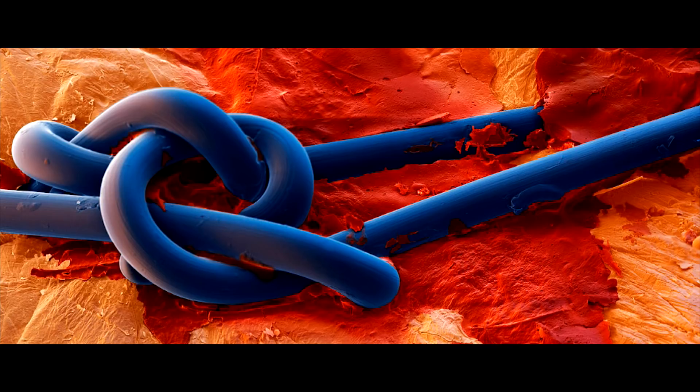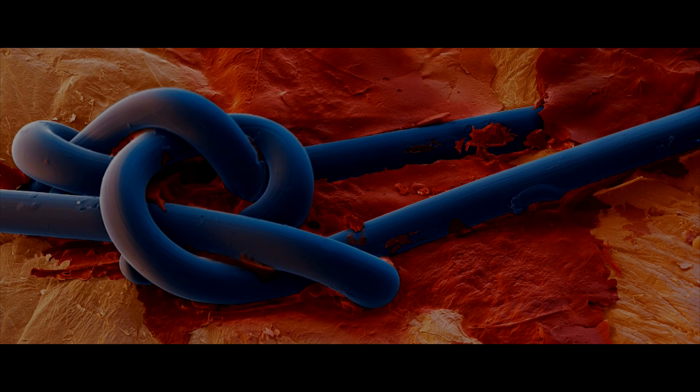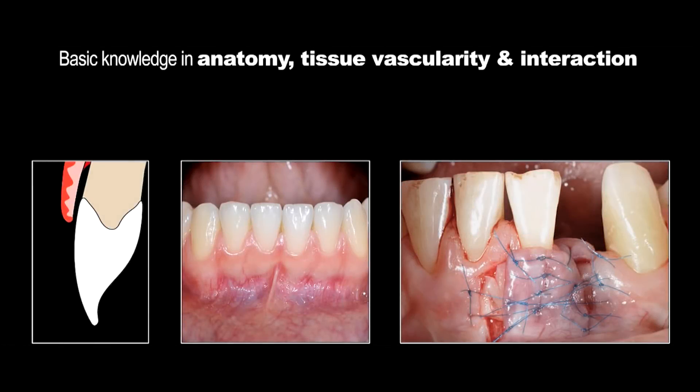We have to talk about suture techniques and suture materials. There is something unique in periodontal and peri-implant surgery: the fact that we try to restore or replace soft tissues on avascular, non-shedding surfaces.